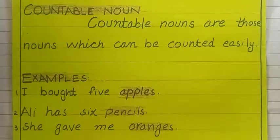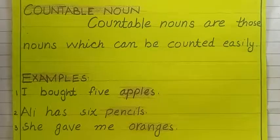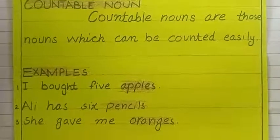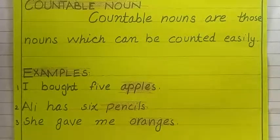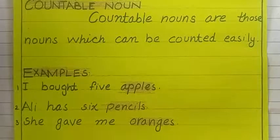Dear students, as I told you there are eight types of nouns. Our main topic is countable noun and uncountable noun. Countable nouns are those nouns which can be counted easily. As the name itself shows — countable — we can count easily. It is called countable noun. For example, 'I bought five apples.' Apple is a countable noun because we can count it easily: I have six apples, I have ten apples, I have twenty-one apples, even a hundred apples. 'Ali has six pencils.' Pencil is a countable noun — it can be counted easily.